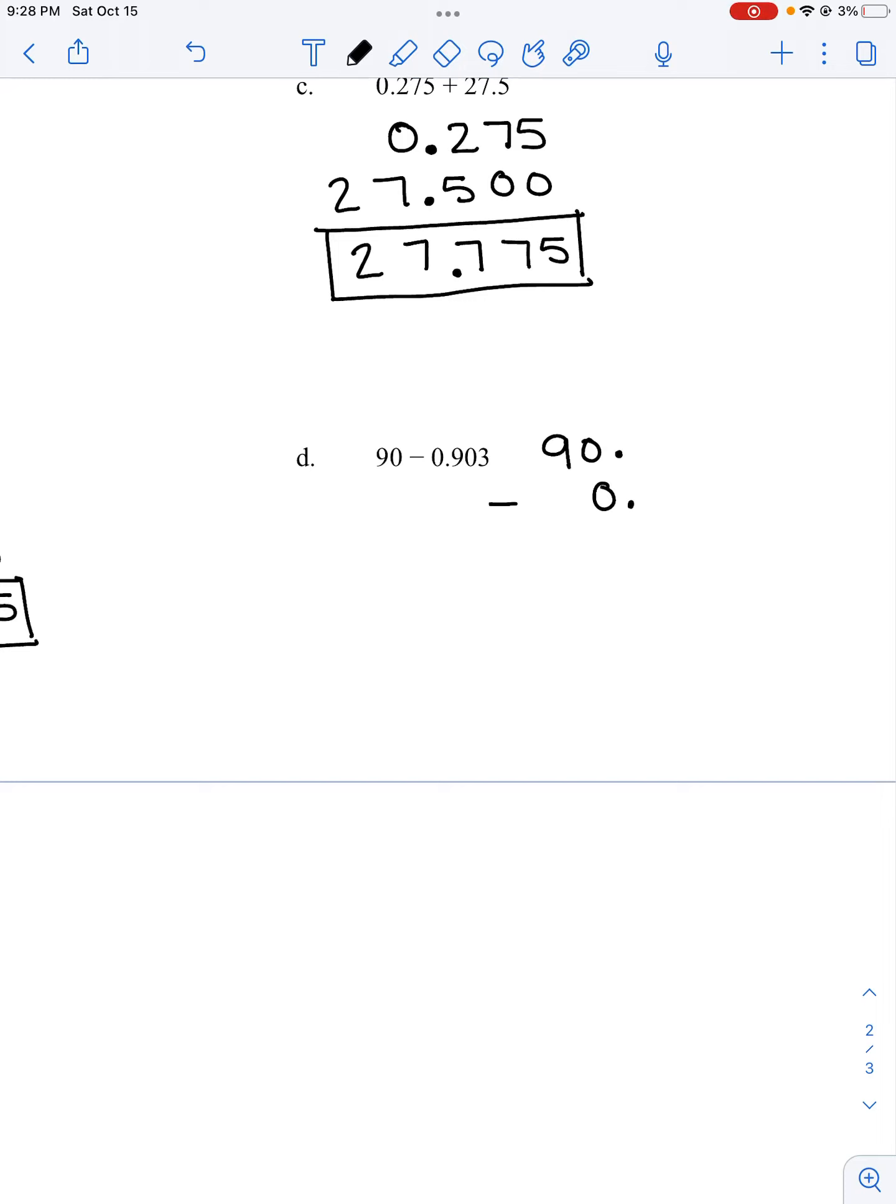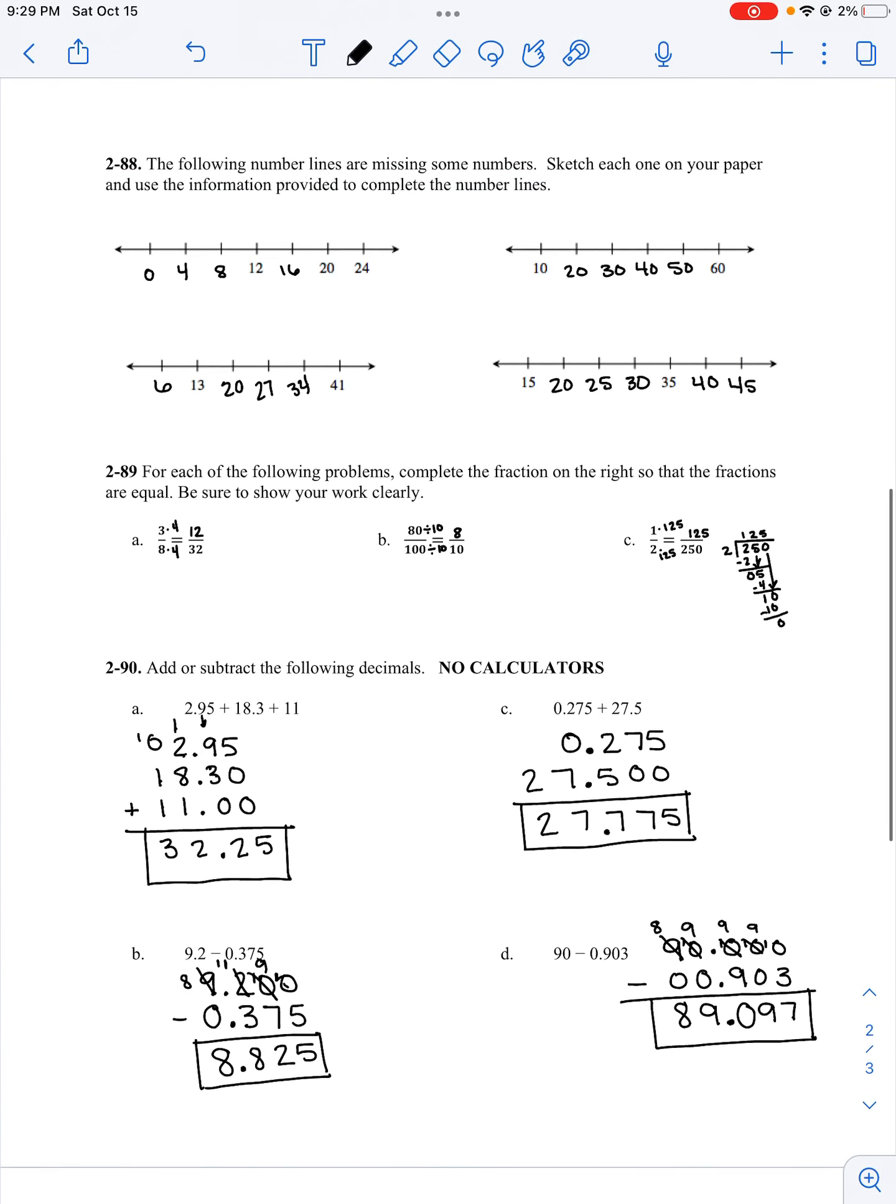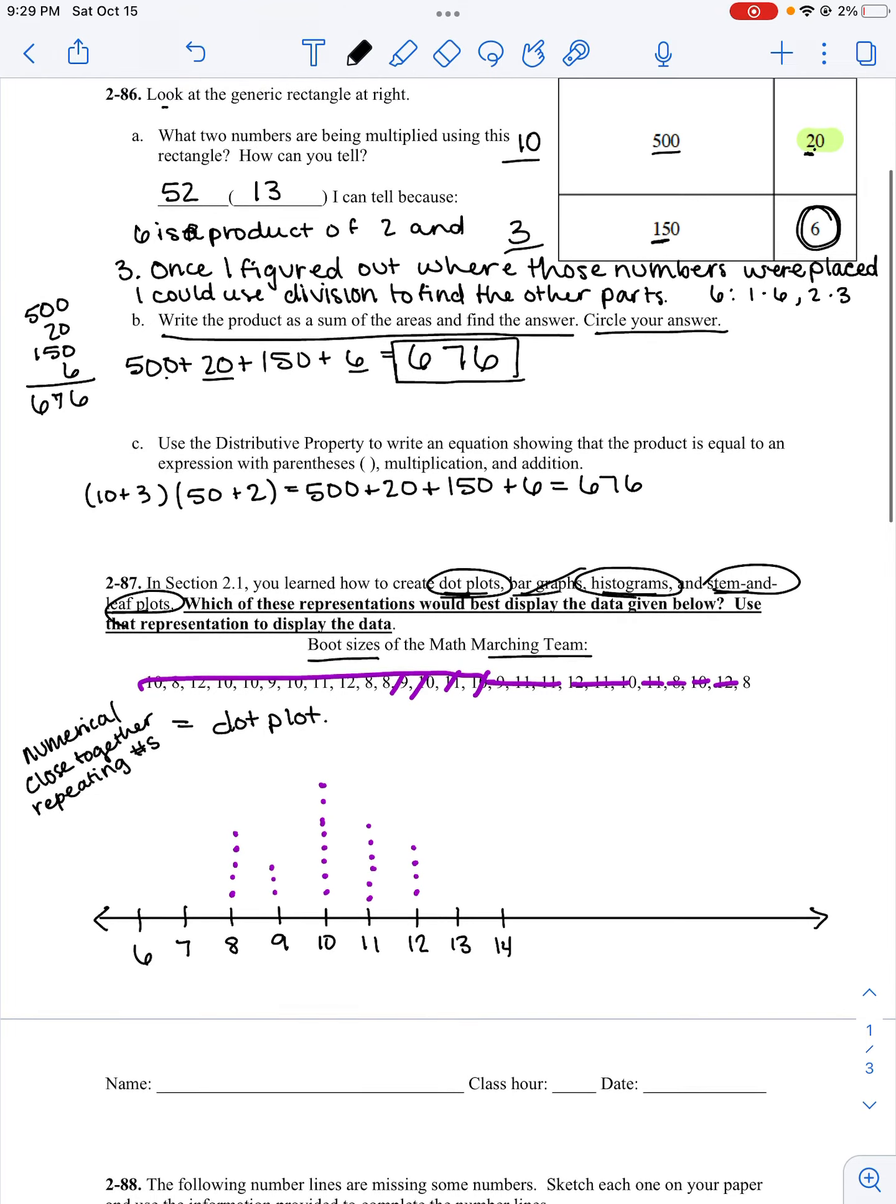Part D I'm subtracting again. Remember I'm lining up those decimals and I'm making sure I fill in the other parts with zeros, particularly for subtracting. I have to borrow all the way from my 9 and my 90, and then I have to borrow all the way across. 10 minus 3 is 7, 9 minus 0 is 9, 9 minus 9 is 0, 9 minus 0 is 9, 8 minus 0 is 8. It is 89 and 97 thousandths. As always, if you have any questions please...